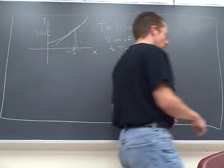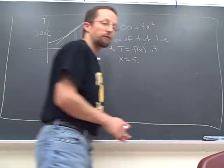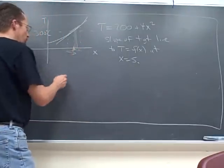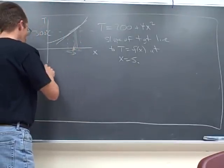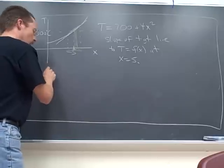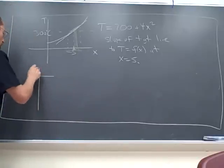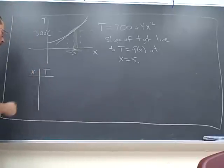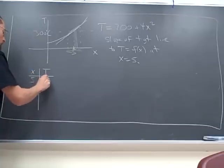So I want to show you that process. For example, if I made a little table, x and T, well 5 gets us 300.